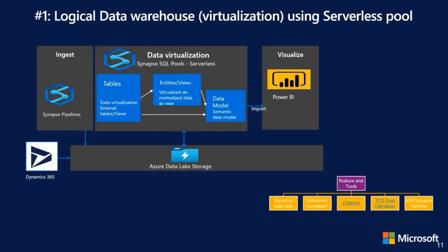Let's start on some of the architecture patterns with respect to Dynamics 365 data. This first pattern uses fundamentally the serverless SQL lake database concept to virtualize the data in the lake and build a logical data warehouse structure without moving data out of the lake. The Dynamics 365 applications move the data into the lake, then you use the serverless or lake database concept in Synapse to create the logical data model, and import the transformed data into Power BI. The steps are: use CDM Util to create serverless external tables and views, optionally create data entities as views for denormalized data, create the star schema logical data model, and create your Power BI dataset in import mode.